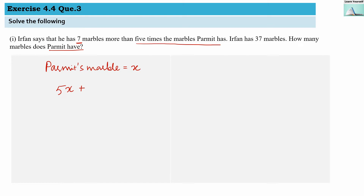Then he says 7 marbles more, so here we add 7. This count represents Irfan's marbles, because Irfan says he has 7 more marbles added to 5 times Parmit's marble count. Irfan has 37 marbles, so this equals 37. This is our equation: 5x + 7 = 37.